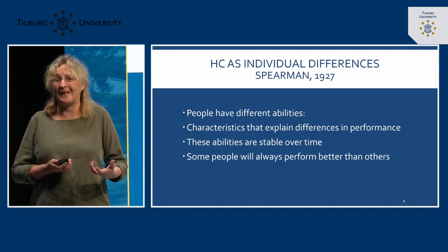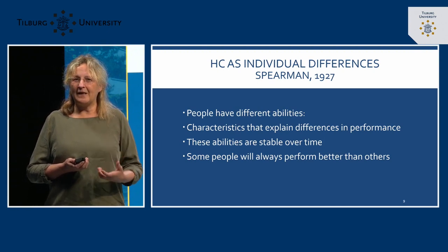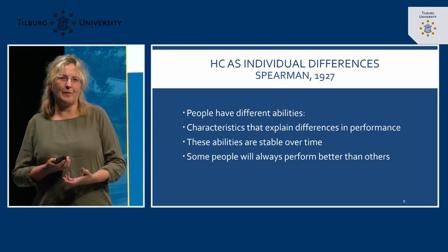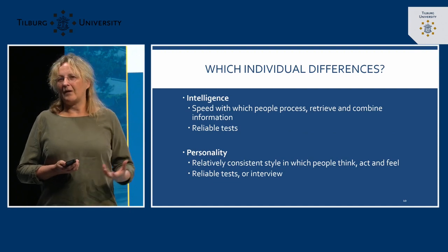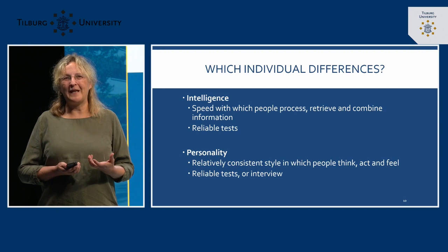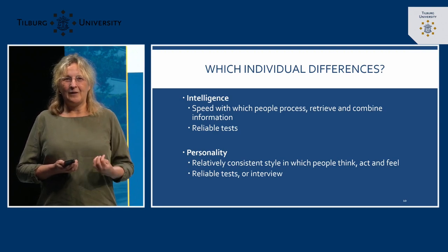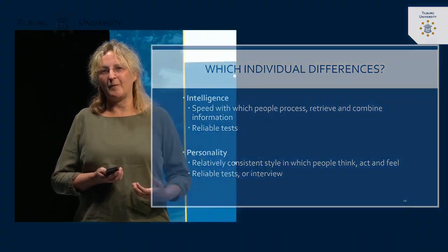Another key assumption of the individual differences theory is that these differences between individuals matter for their performance. A talkative person is more likely to perform well in a job where a lot of talking is part of the role. The question is: which abilities really matter for creating a sustainable performance difference over time? The well-researched differences within individuals that matter for performance are basically two things: first, intelligence, and second, personality.